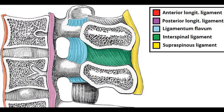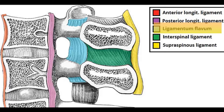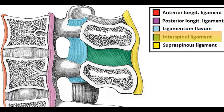There are 5 ligaments that you need to know. There is the anterior and the posterior longitudinal ligaments. The ligamentum flavum, which connects the vertebrae from laminae to laminae. The interspinal ligament connecting the spinous processes, and the supraspinous ligament.